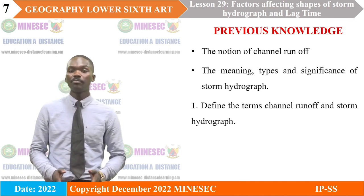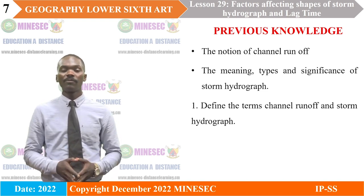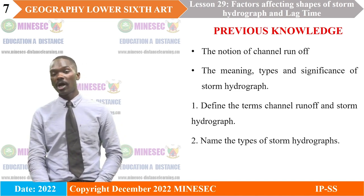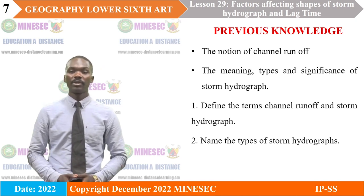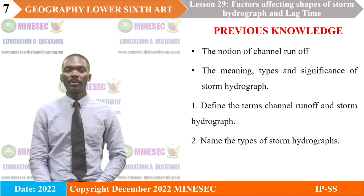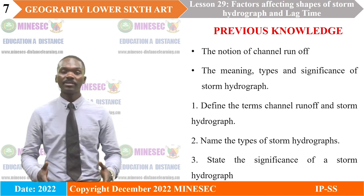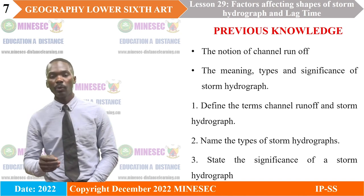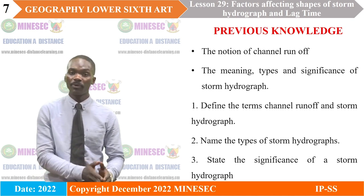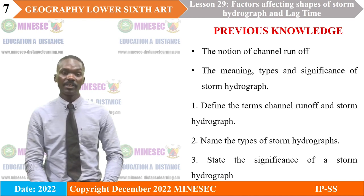The storm hydrograph is simply the relationship between the rainfall and the time that it takes for a peak to be attained. The types of storm hydrograph are the flashy or peak, the subdued, and the double type. Its significance lies in the fact that it helps stakeholders and community leaders to take decisions concerning flood prediction and the resettling of citizens in their community.